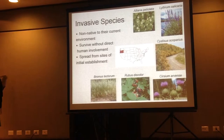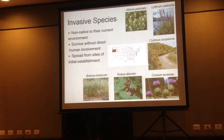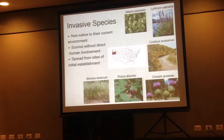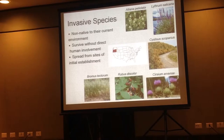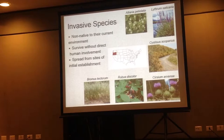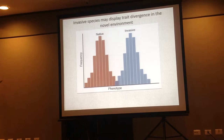First I'm going to talk a little bit about what invasive species are. Here I have some features of invasive plants from around Oregon in the U.S. They're very diverse, cause a lot of economic and ecological damage, and are defined as species that are not native to their current environment. They survive without direct human involvement and spread from their sites of initial establishment. This makes them very interesting evolutionarily — they move from one environment to another and adapt over a short time span, proliferating in their new environment. We can use them as model organisms to look at adaptation in natural populations.